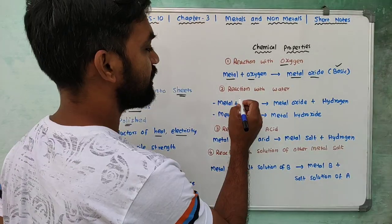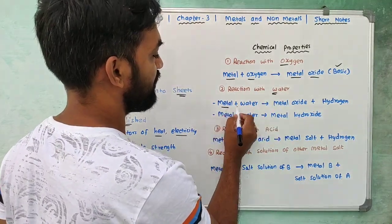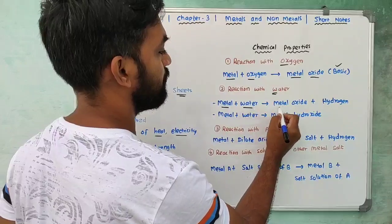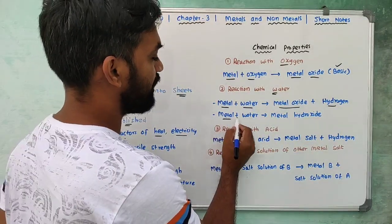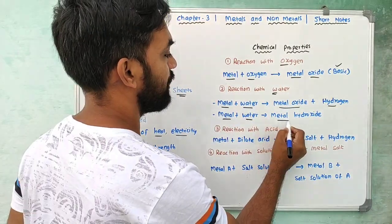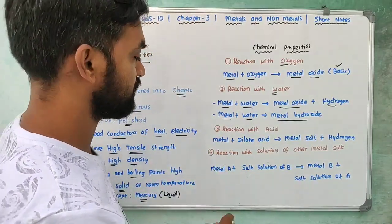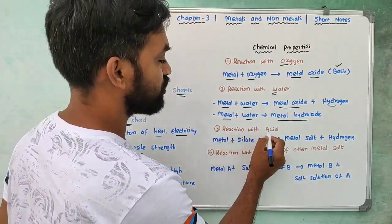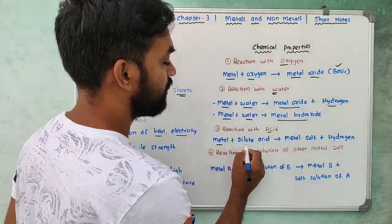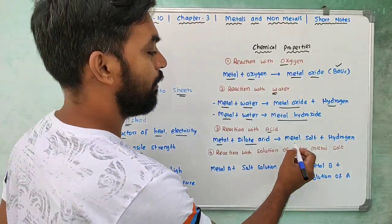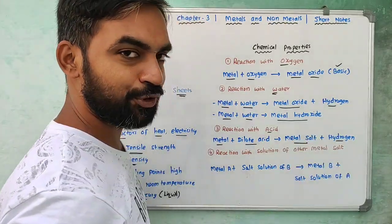Next, reaction with water: metal plus water produces metal hydroxide. Reaction with acid: metal plus dilute acid produces metal salt and hydrogen gas.